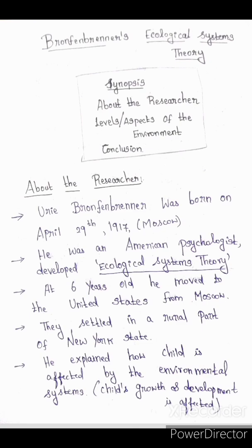Regarding the researcher: Urie Bronfenbrenner was born on April 29th, 1917, in Moscow. He was an American psychologist who developed the Ecological Systems Theory. He moved to the United States from Moscow at age six, and they settled in a rural part of New York.